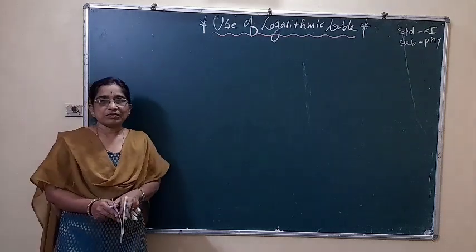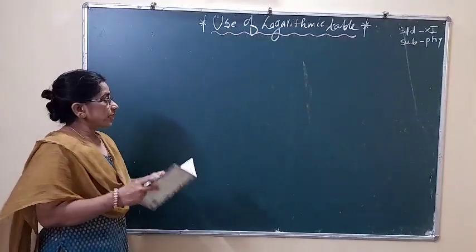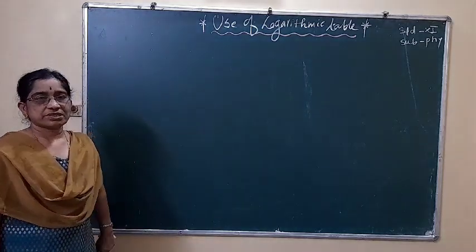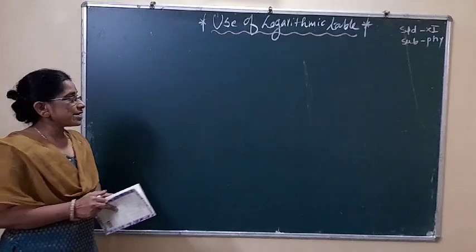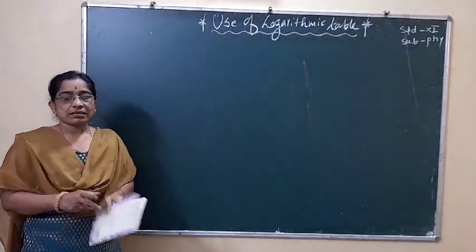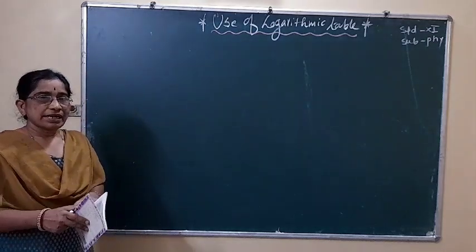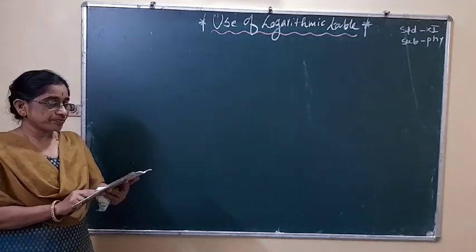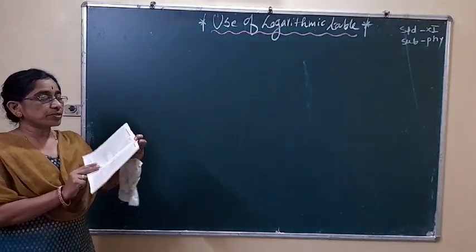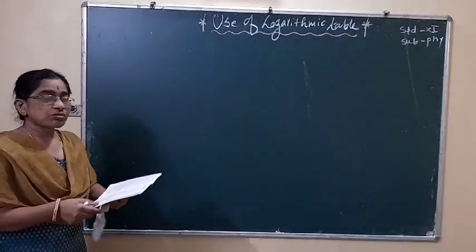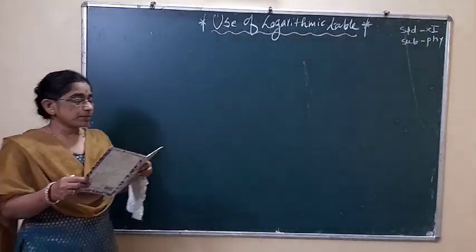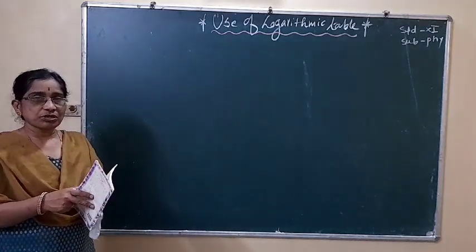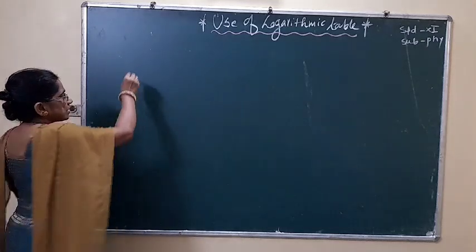Hello students, welcome all of you. Today we have to see an example by applying three rules at a time simultaneously. And how can I find square root and reciprocal directly in the same logarithmic table — from the reciprocal of a four-figure number — means without doing logarithmic calculation we have to find reciprocal of four-figure numbers, reciprocal of a given number and square root.